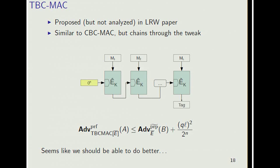In the tweakable block cipher paper, Liskov, Rivest, and Wagner proposed TBC-MAC, the construction shown here. It's essentially the same thing as CBC-MAC, except the chaining value goes through the tweak. In fact, you can view CBC-MAC as a particular instantiation of this construction. We did the security analysis, and it turns out you only get birthday bound type security. This is disappointing. Tweakable block ciphers are much more powerful primitives than regular block ciphers. We have a whole set of random permutations rather than just one. Surely we should be able to get better than the birthday bound.